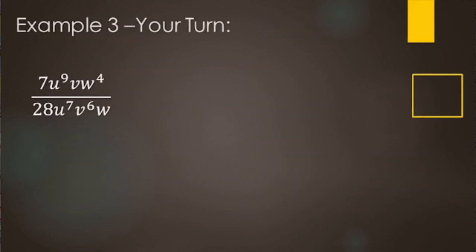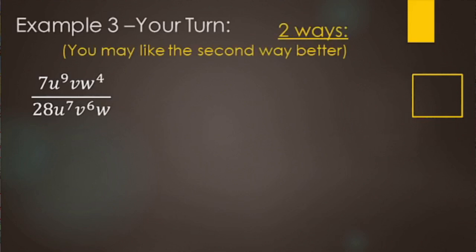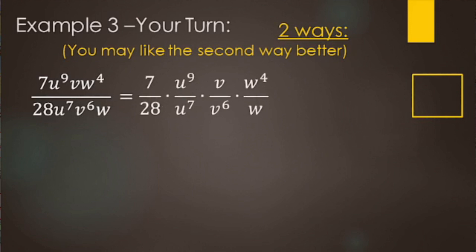Go ahead and try this one out on your own — pause the video, then come back and see how you did. We're going to do this two different ways; you may like the second way better. We split them all up: 7 over 28 first, then the U's, then the V's, then the W's.